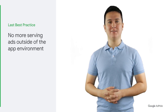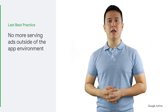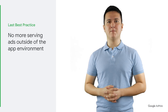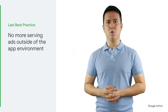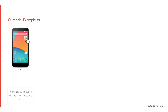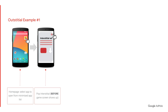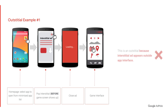To ensure that you get the most out of your ads, we encourage all developers to be policy compliant. One of the most common policy violations when implementing interstitial ads is serving ads outside of the app environment. These out-of-context ads are referred to as outstitials. Some interstitial ad implementations have caused confusion among developers as to whether they are compliant or not. Example one: at the homepage of your mobile, select the app you want to open. Upon clicking into the app, the interstitial ad pops up before the game screen shows. The user closes the ad and is brought back to the app interface. This is an outstitial because the page before the interstitial is outside the app interface.